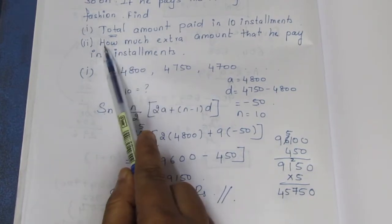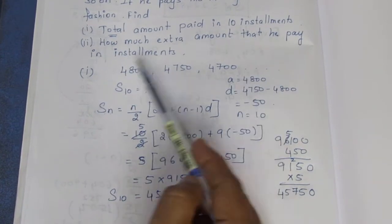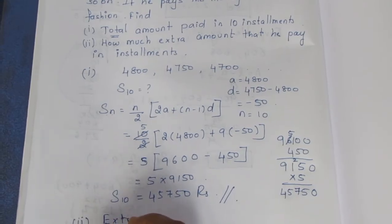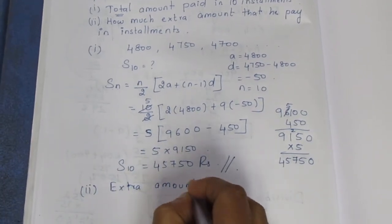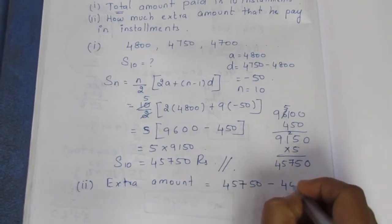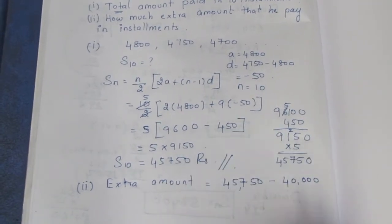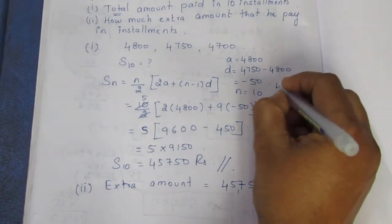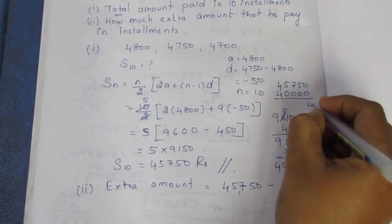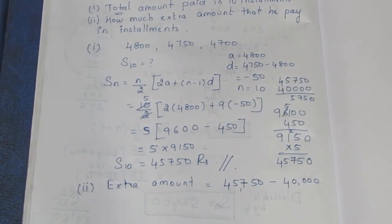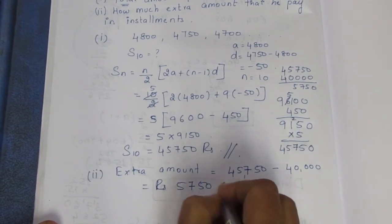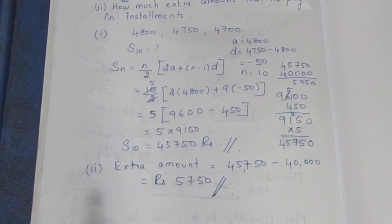The total cash price is 40,000. The next question asks how much extra amount is paid in installments. The extra amount equals 45,750 minus 40,000, which is 5,750 rupees. This is the extra amount paid when buying on installments.